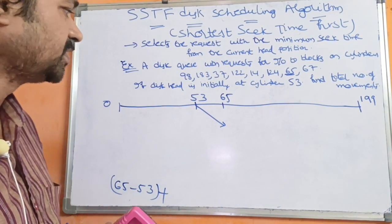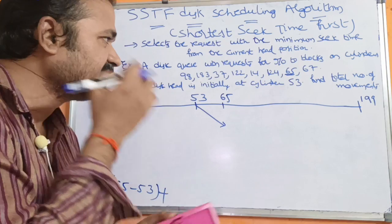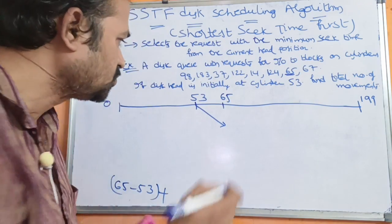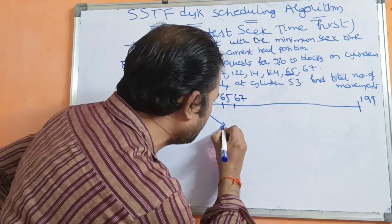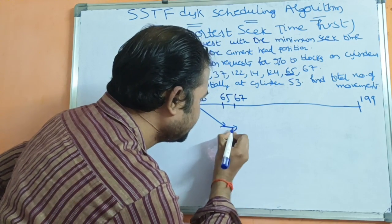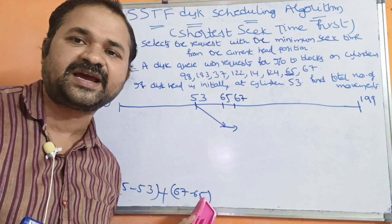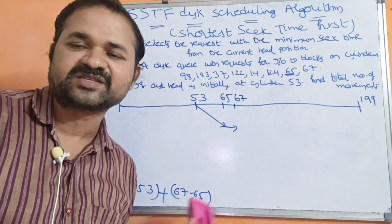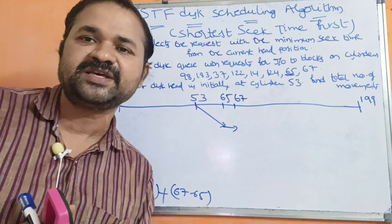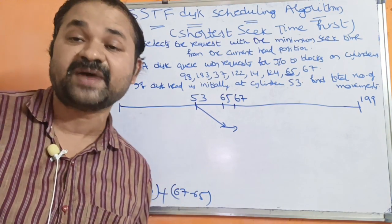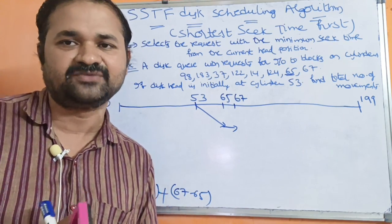Now the read/write head is at cylinder 65. The nearest remaining value is 67. We always subtract the lower value from the higher value to get a positive result — so 67 minus 65. We should not write 65 minus 67, as that would give a negative value of minus 2.